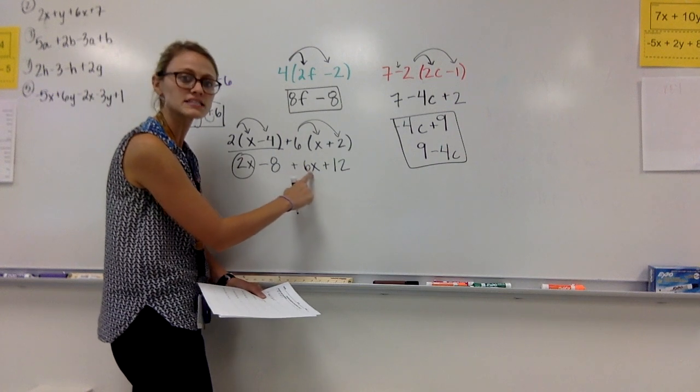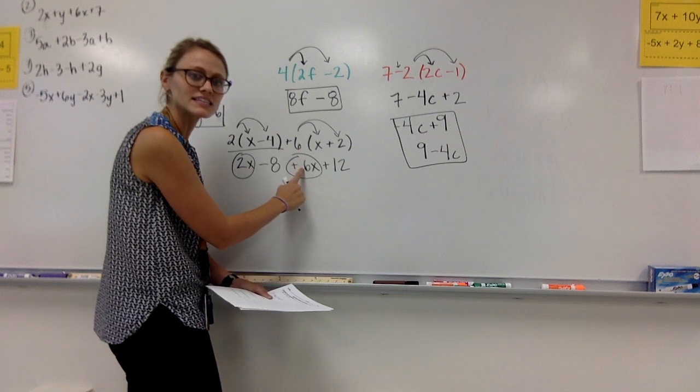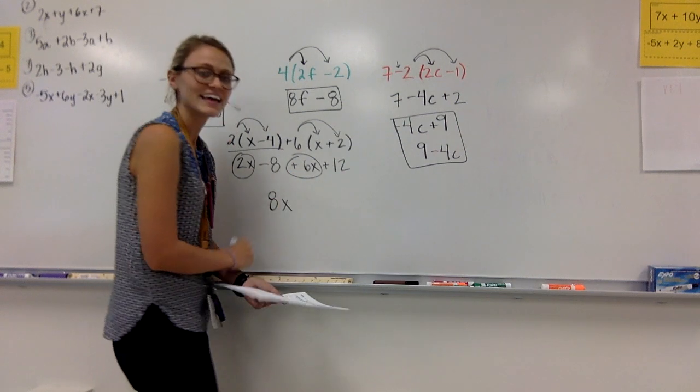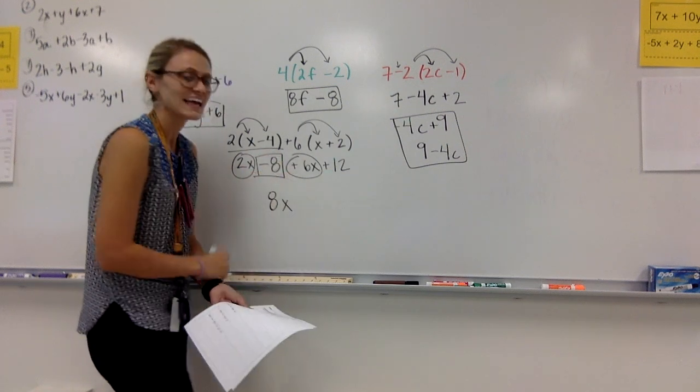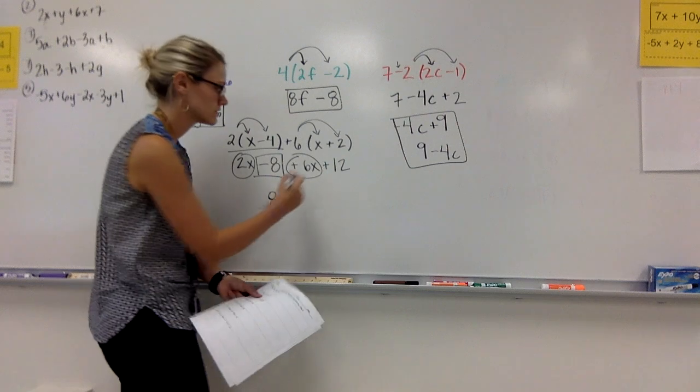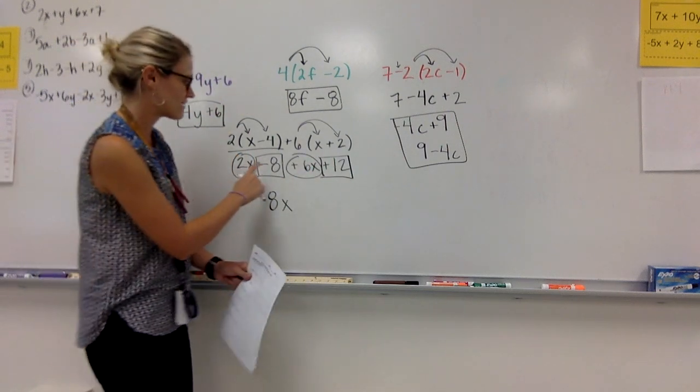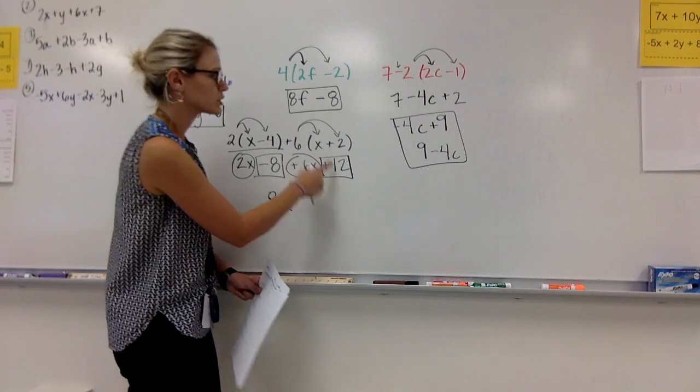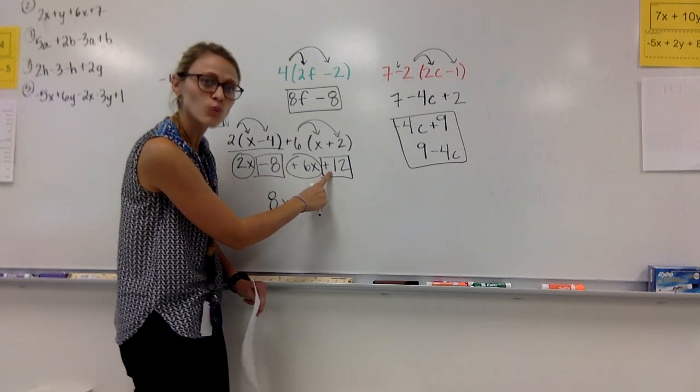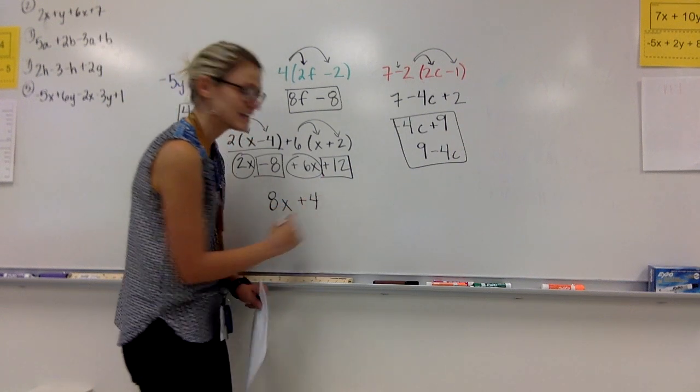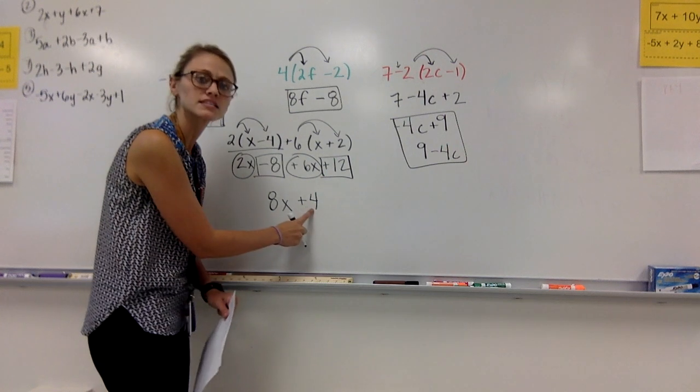And I have a +6x. 2x's plus 6 more x's is 8x's. I also have a -8 + 12. I have a -8 + 12.